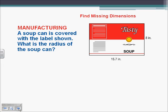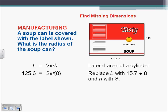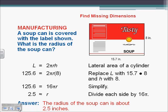Here we're asked to find the radius of a soup can covered with a label. The lateral area of the label is 8 times 15.7, which is 125.6. We know the lateral area equals 2π times the radius times the height, and the height is 8. So 125.6 equals 2π times r times 8, which is 16πr. Dividing both sides by 16π, the radius is approximately 2.5 inches.